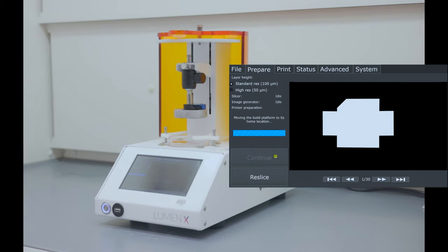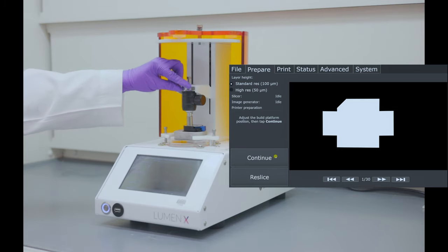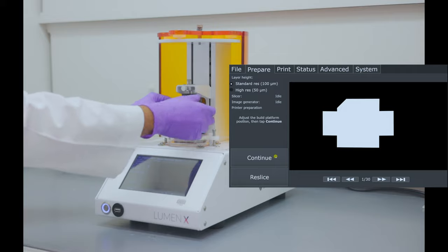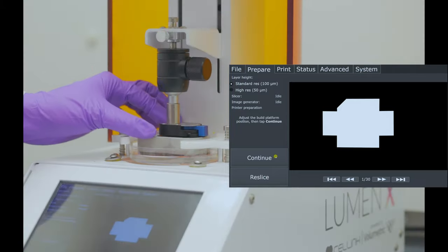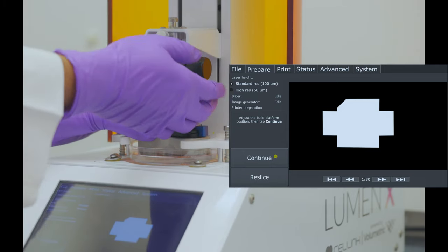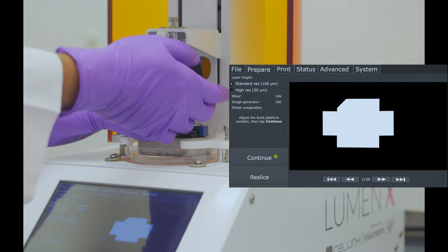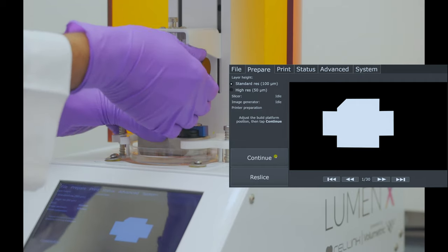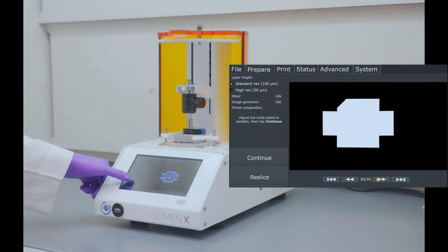Now, tap on prepare. After the build platform is lowered and stopped, loosen the metal screw and loosen the knob on the right. With one hand, gently hold the build platform onto the vat and tighten both the metal screw and the knob on the right. Now, tap on continue.